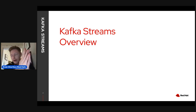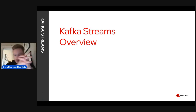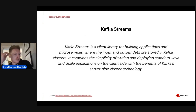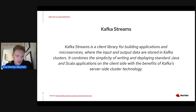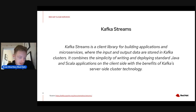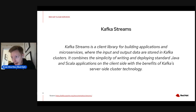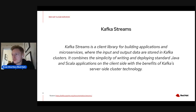Kafka Streams is a client library for building applications and microservices where the input and output data are stored in Kafka clusters. It's designed to be used in Java or Scala applications as a client-side library, giving you the benefits of Kafka server-side technology. Essentially it's a library you can embed in a Java or Scala application to process data stored in Kafka clusters — sourcing data from your cluster and writing it back after transformations.